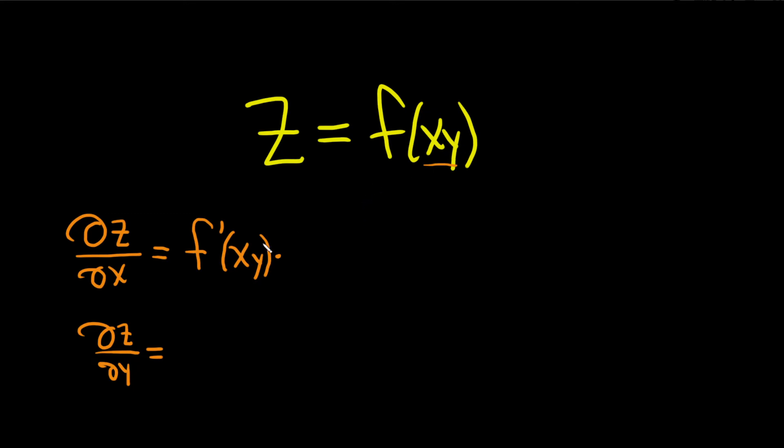So the y is a constant. The derivative of x is 1, so we just get 1 times y. So we just get y f prime of xy.